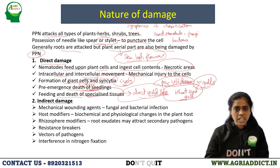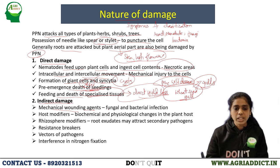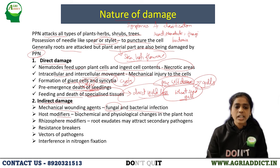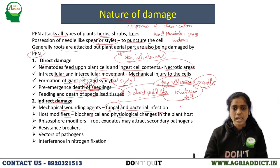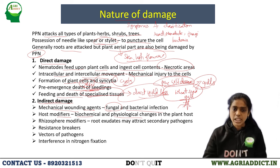Coming to indirect damage: nematodes act as mechanical wounding agents — as they puncture plant tissue, it causes formation of wounds, which form an efficient entry point for fungal and bacterial infection. As host modifiers, when the nematode enters into the plant system, it causes biochemical and physiological changes in the host, making it more prone to secondary plant pathogens — bacteria and fungi. It also diverts nutrients and water absorbed by the roots to the nematode itself, instead of moving them to the shoot system.